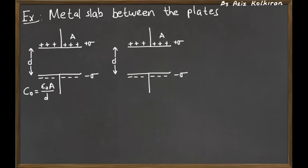The question is: what happens if we insert a metal slab in between these two plates with a thickness A?